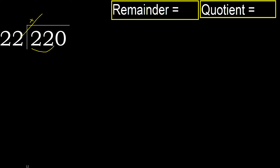22 multiplied by which number is nearest to 22 but not greater? 22 multiplied by 2 is 44, which is greater. Multiply by 1: 22 times 1 is 22, which is not greater.